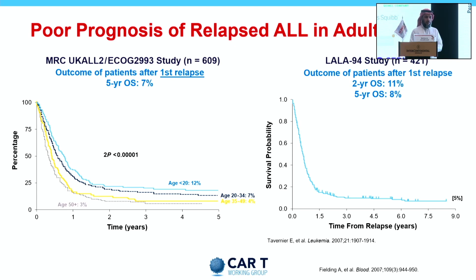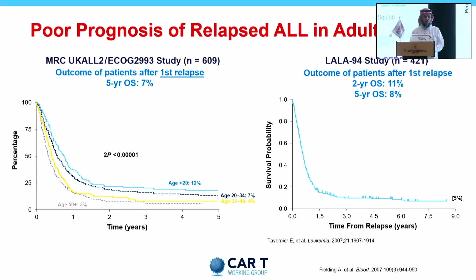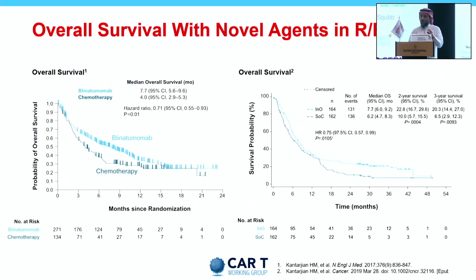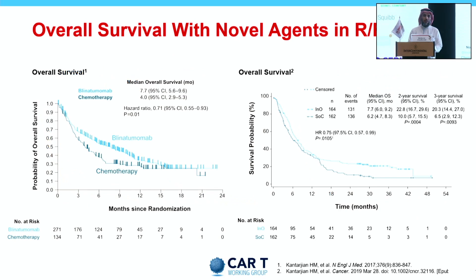As you know, the relapsed refractory ALL carries a very poor prognosis. These two large studies show that the five-year overall survival in relapsed refractory ALL is less than 10% — 7% in the first study and 8% in the second. Even after introduction of novel agents like bispecific therapy, there is improvement, but long-term survival achieved is only 20%. So the prognosis here is dismal.